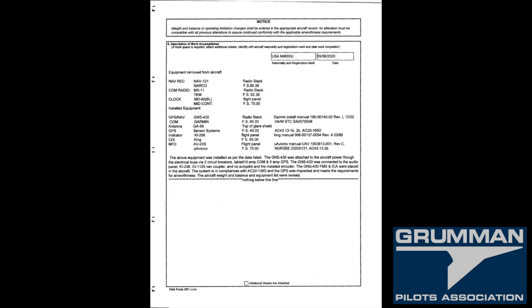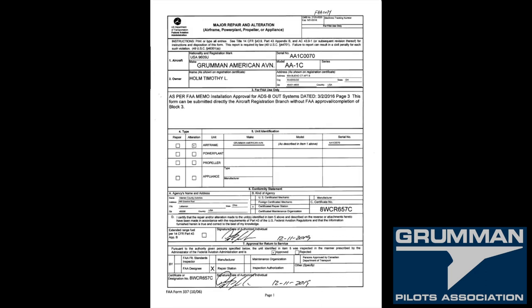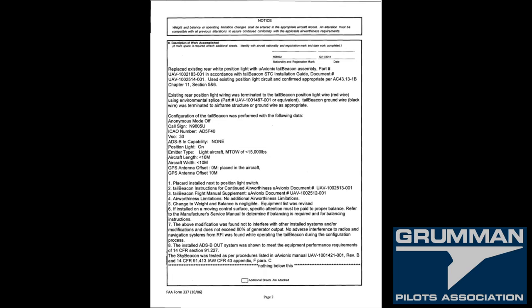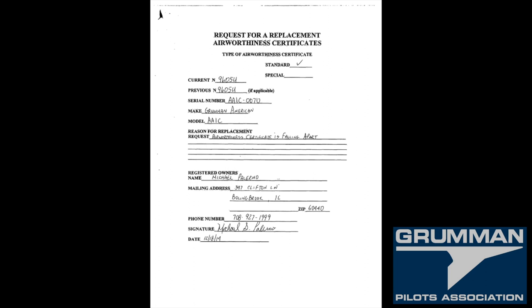The airworthiness file shows all the work all the way back to where you got your original airworthy certificate, or if there was something wrong and it had to be replaced, all that will be in the airworthiness file. It'll list all the 337s as well as all the STCs on the airplane, so now you know what kind of airplane you have to go look at.